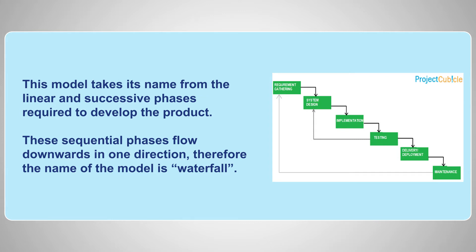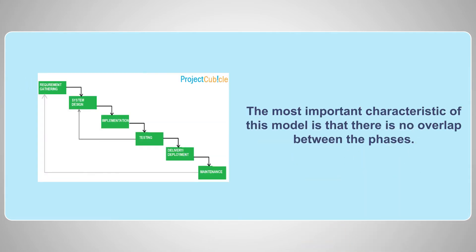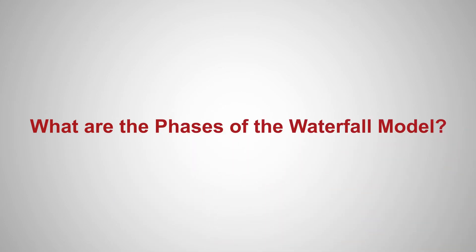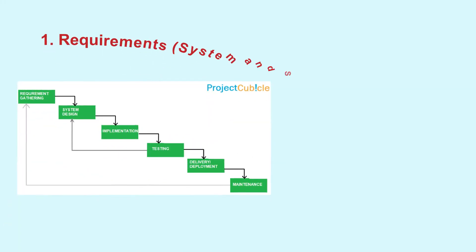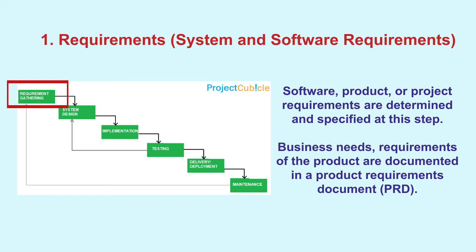These sequential phases flow downwards in one direction, hence the name waterfall. The most important characteristic of this model is that there is no overlap between the phases. In the requirements phase, the business needs and requirements of the product are determined, specified, and documented in a product requirements document.